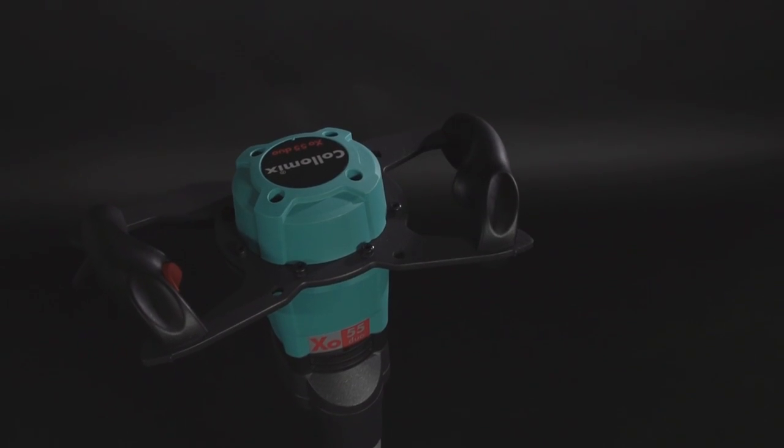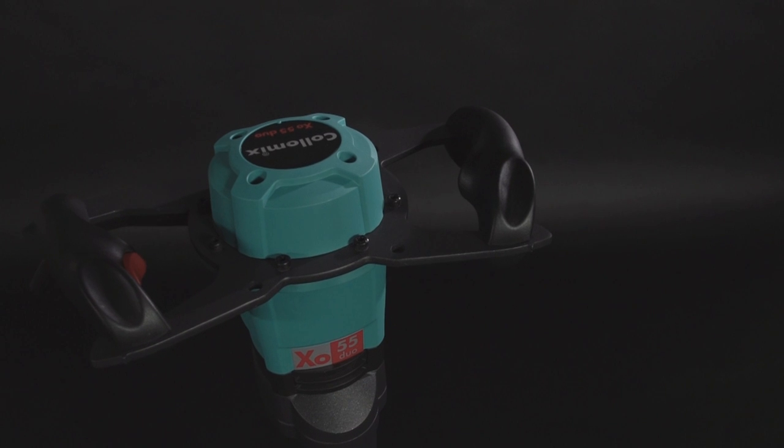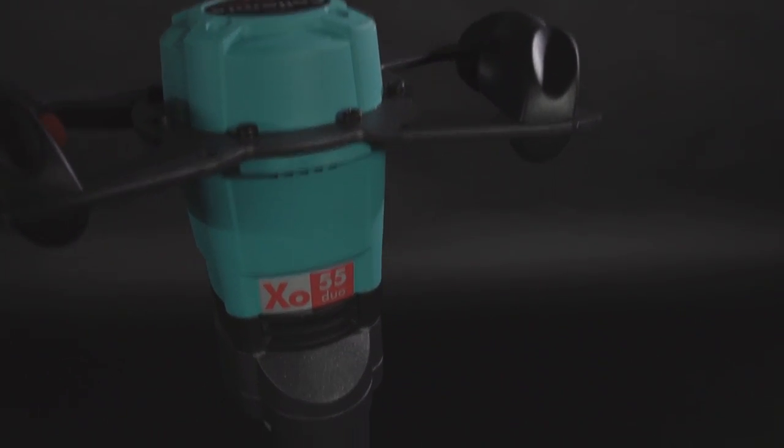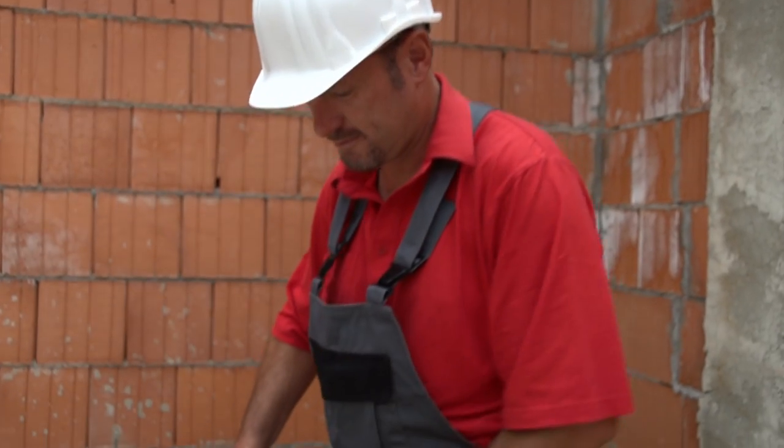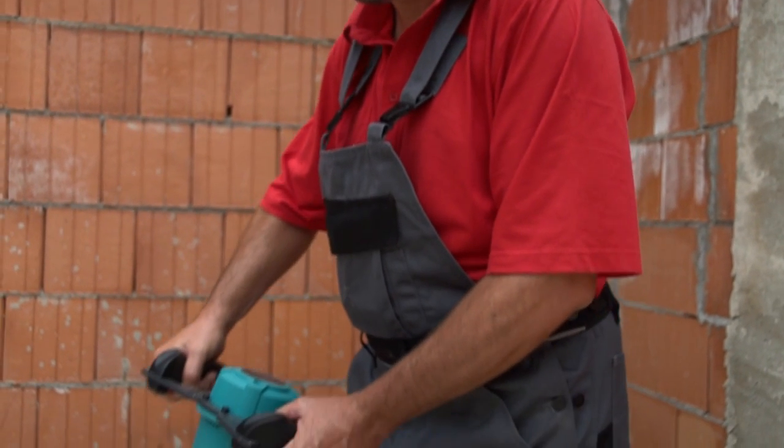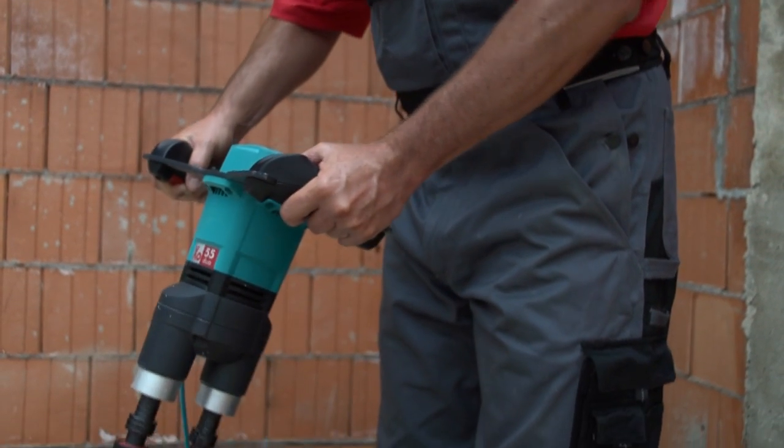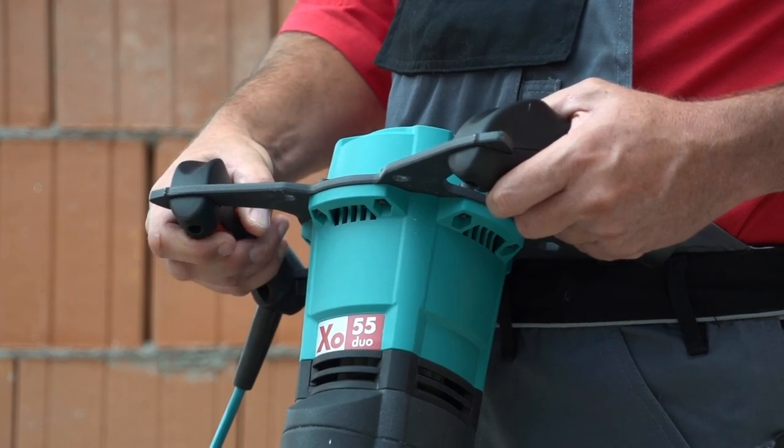What makes the new X055 Duo with its revolutionary design so unique is its excellent ergonomically designed handle and working height. And working in an upright position is really beneficial to the user. The electronic speed control permits gentle adjusting of the motor's power at the push of a button.